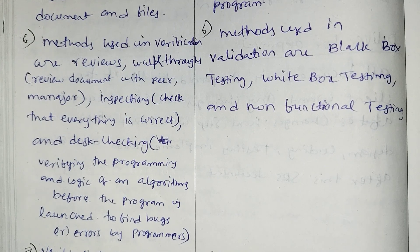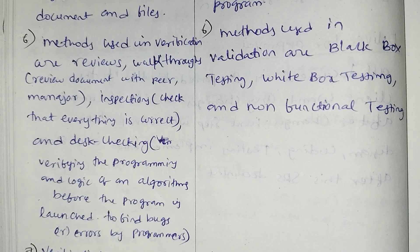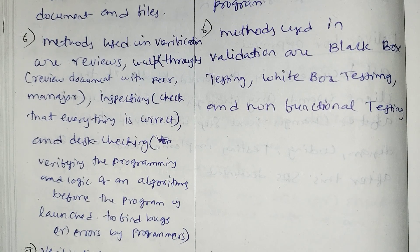To recap, methods in verification include reviews, walkthroughs, review of documents with peers and managers, inspections to check everything is correct, and desk checking to verify correctness before the program runs. Methods in validation include black box testing, white box testing, and non-functional testing.